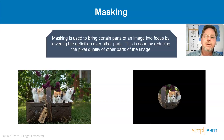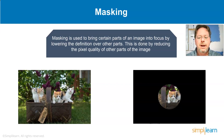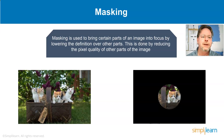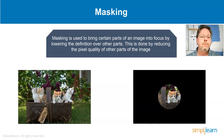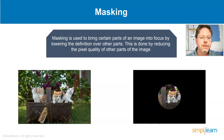Masking is used to bring certain parts of an image into focus by lowering the definition over other parts, done by reducing the pixel quality of other regions. For example, the background might be all ones and the cat all zeros, or vice versa. You can then do a transformation on either the background or foreground — maybe blur the background and make the foreground sharper. Masking allows you to separate your image and do those different things.